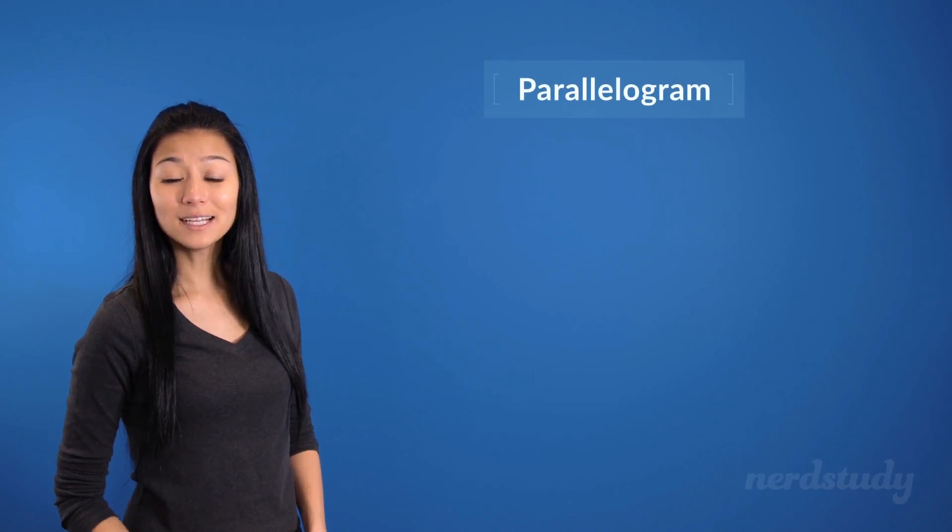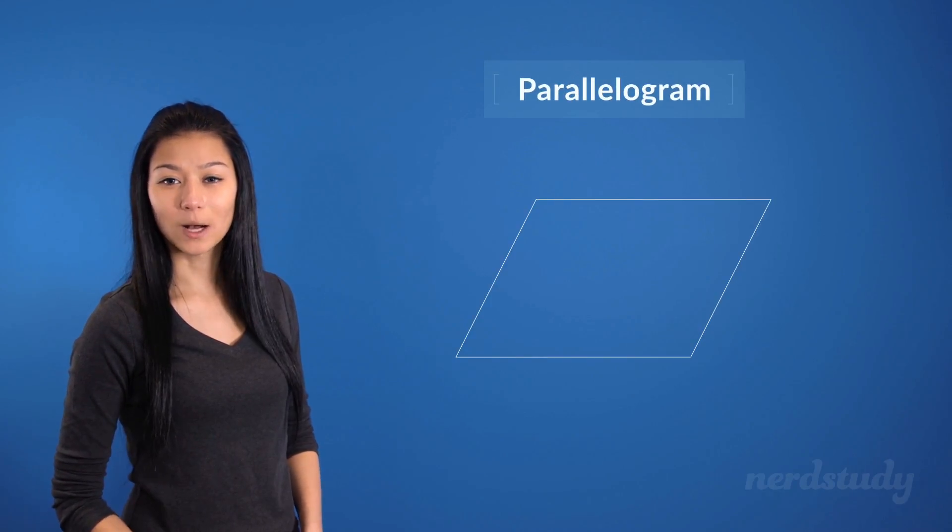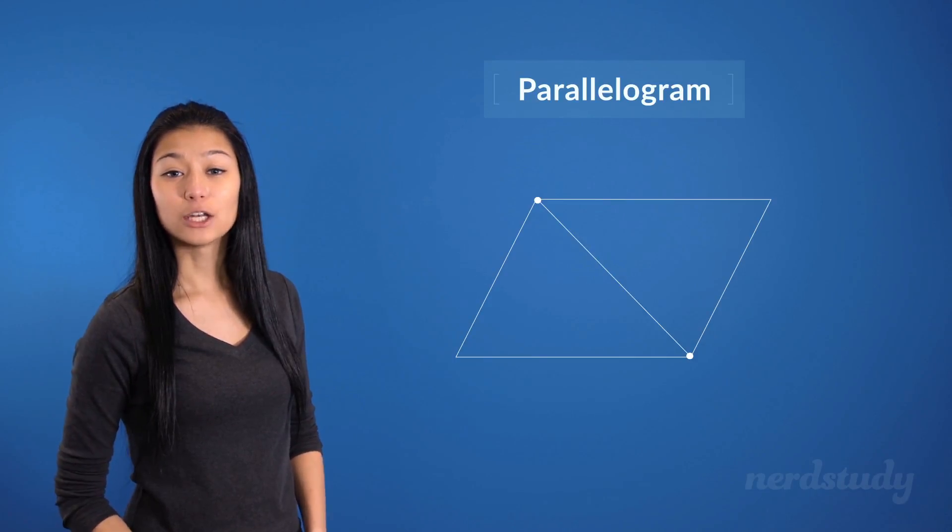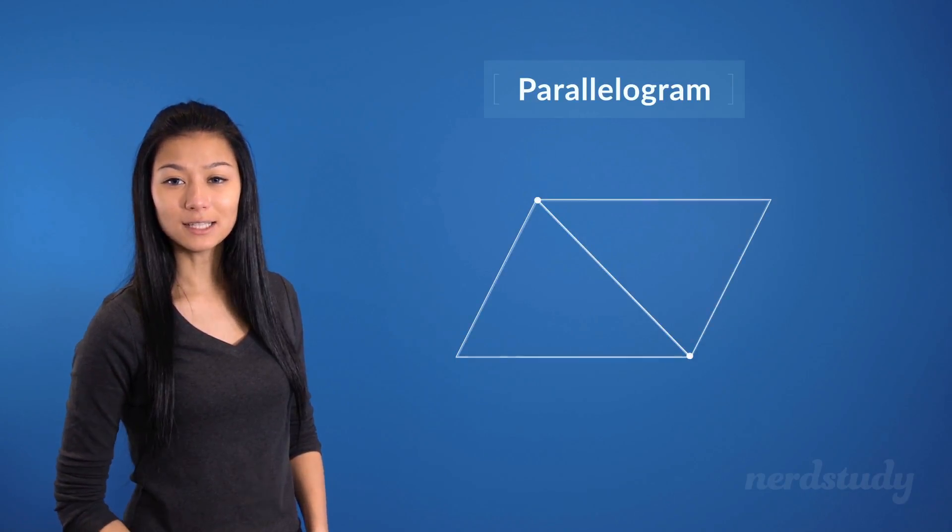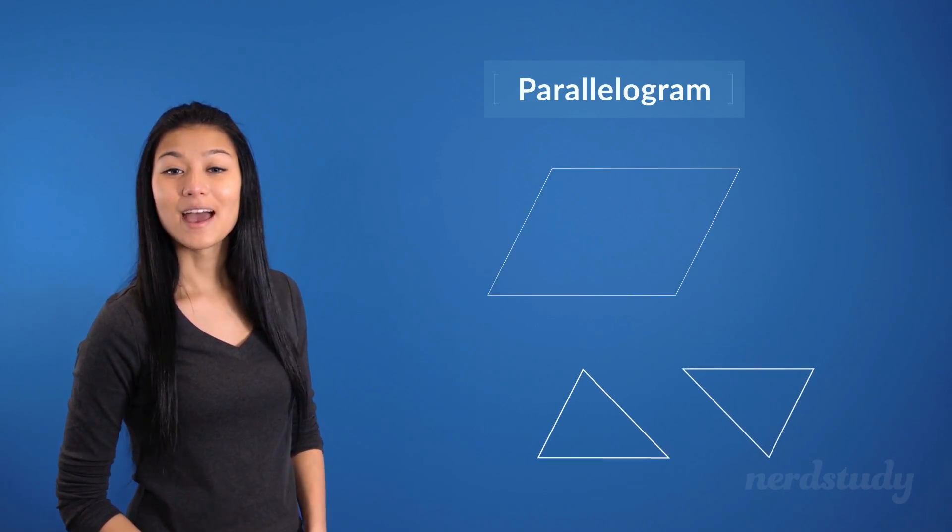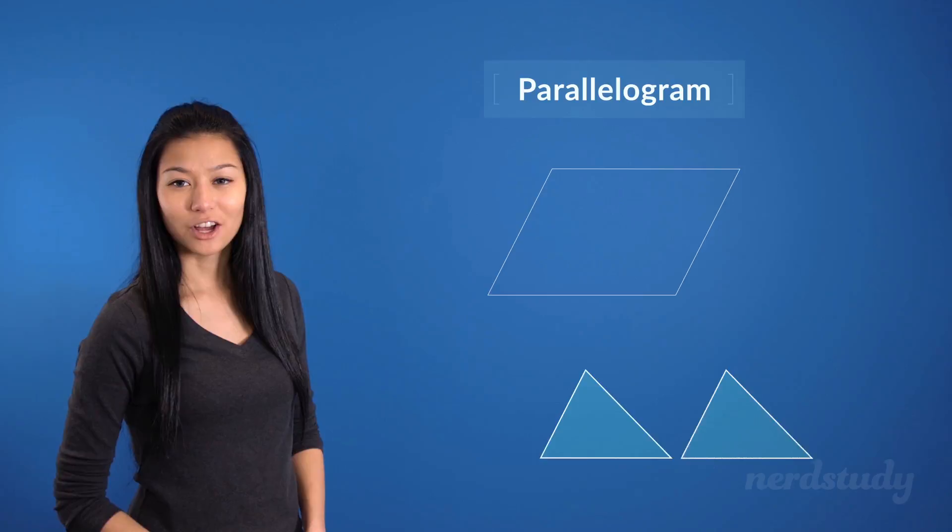Well, a parallelogram has its own property as well, where if you take the opposite points of a parallelogram and you draw a line, then the parallelogram will have been bisected. In other words, the two areas here and here will be equal to each other.